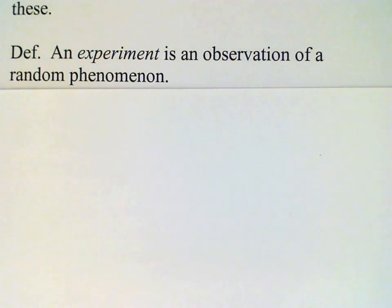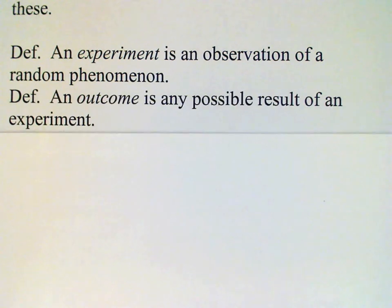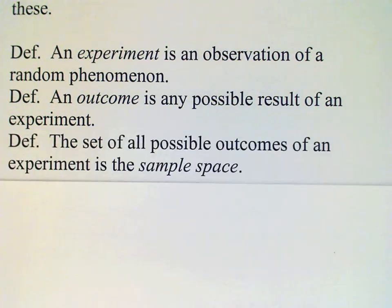We'll refer to an experiment as an observation of a random phenomenon, and an outcome is going to be any possible result of an experiment. The set of all possible outcomes for a given experiment is the sample space.